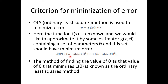Here y is the actual value and g(x, theta) is the predicted value. The method of finding the value of theta that minimizes E(theta) is known as the Ordinary Least Square method. The minimum value of E(theta) gives us the optimal parameters.